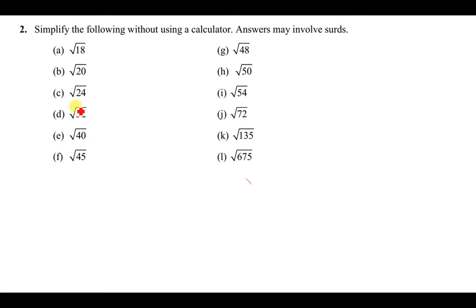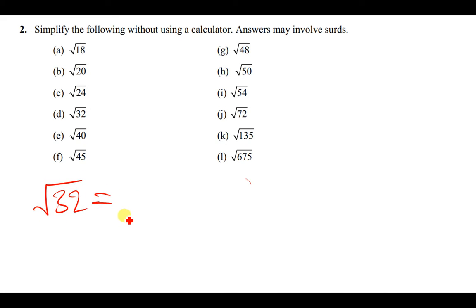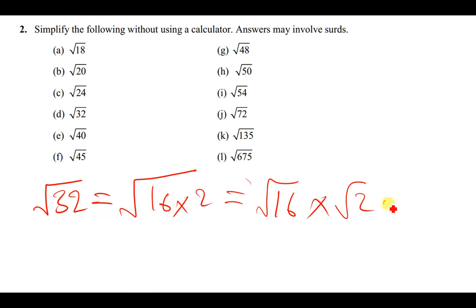For √32, we find a perfect square that can go into 32. We know that 4 and also 16 can go into 32. So the square root of 32 can be written as the square root of 16 times 2, which is the square root of 16 times the square root of 2. The square root of 16 is 4, so the answer is 4√2.